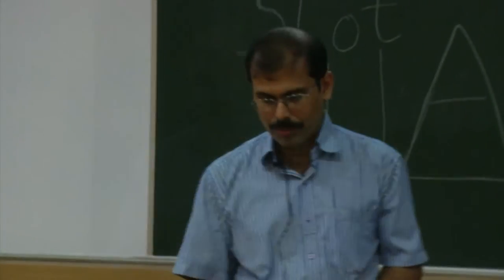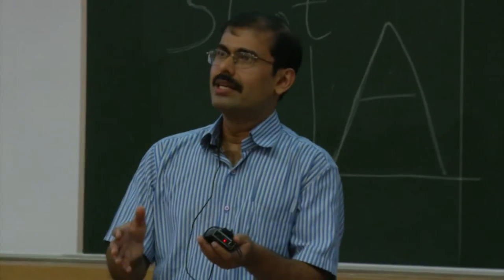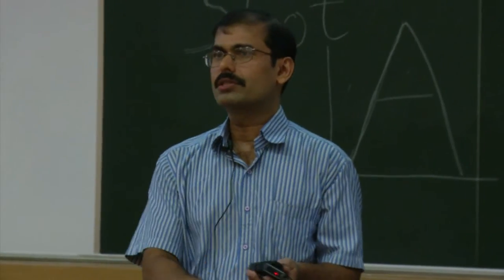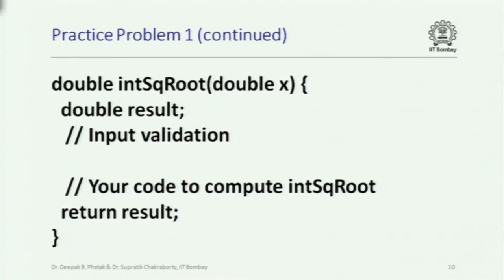Computing the integer part of the square root may be much simpler than computing the exact square root and then taking the integer part. Here is the basic skeleton: it is a double int_sqrt(double x). Within the function you will have a result variable which should also be double. You can do some input validation — this function only takes non-negative input. Then you write code to compute the integer square root, and then the result should be returned. This is the relation we want: result² ≤ x < (result + 1)².